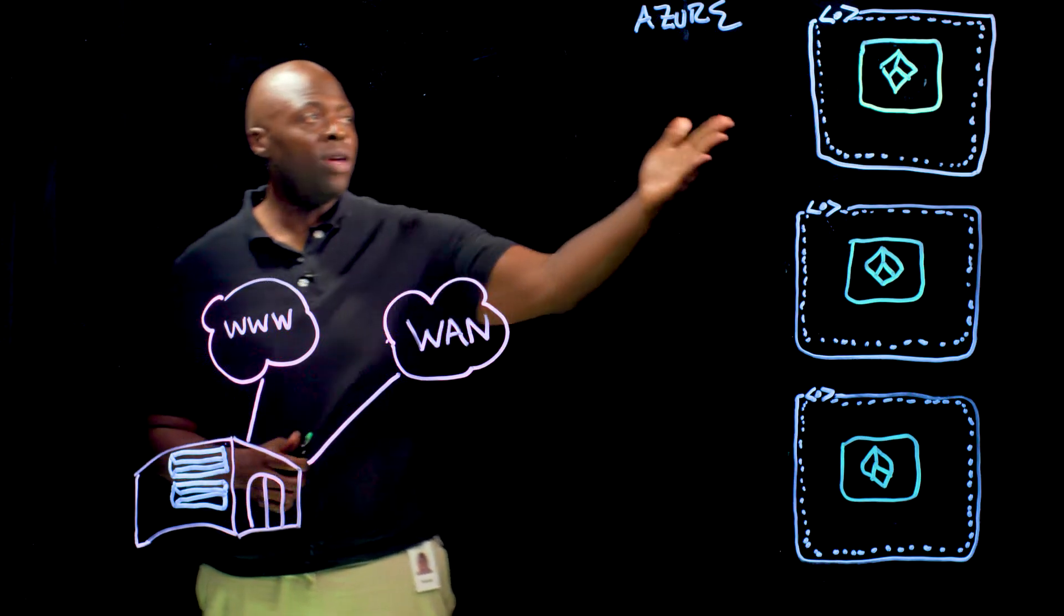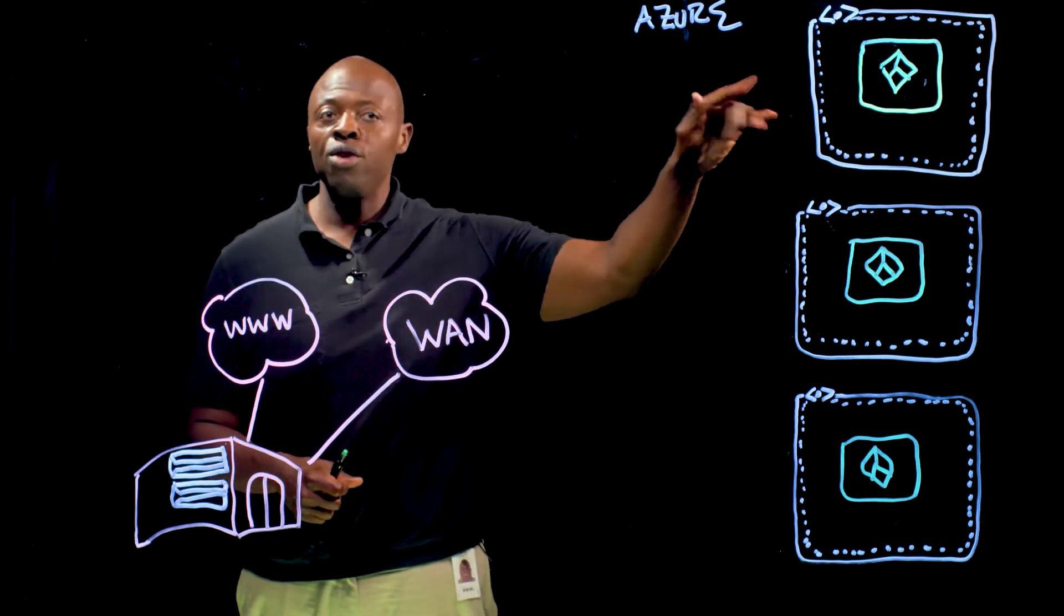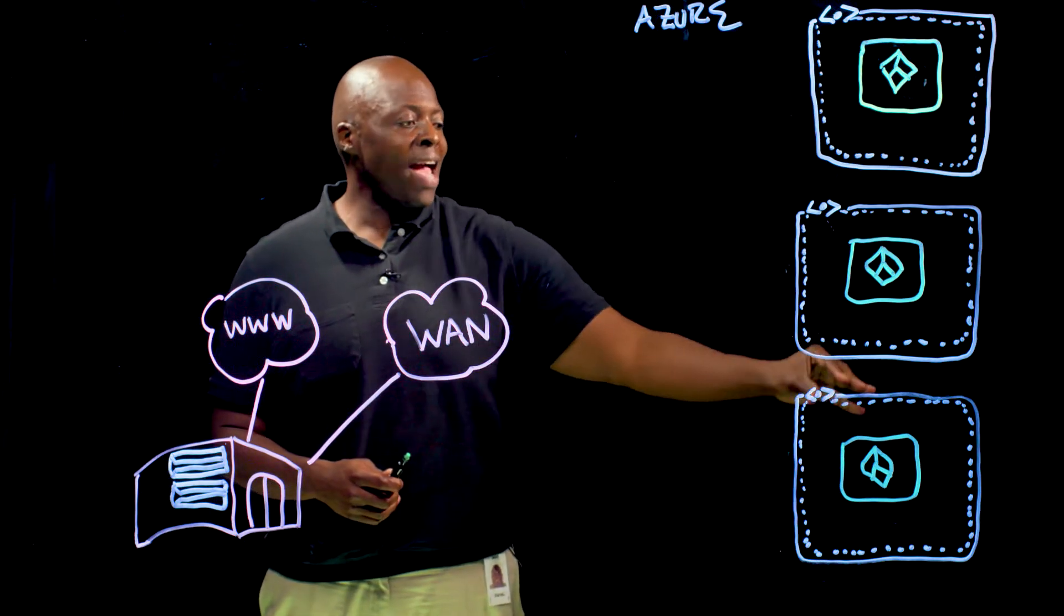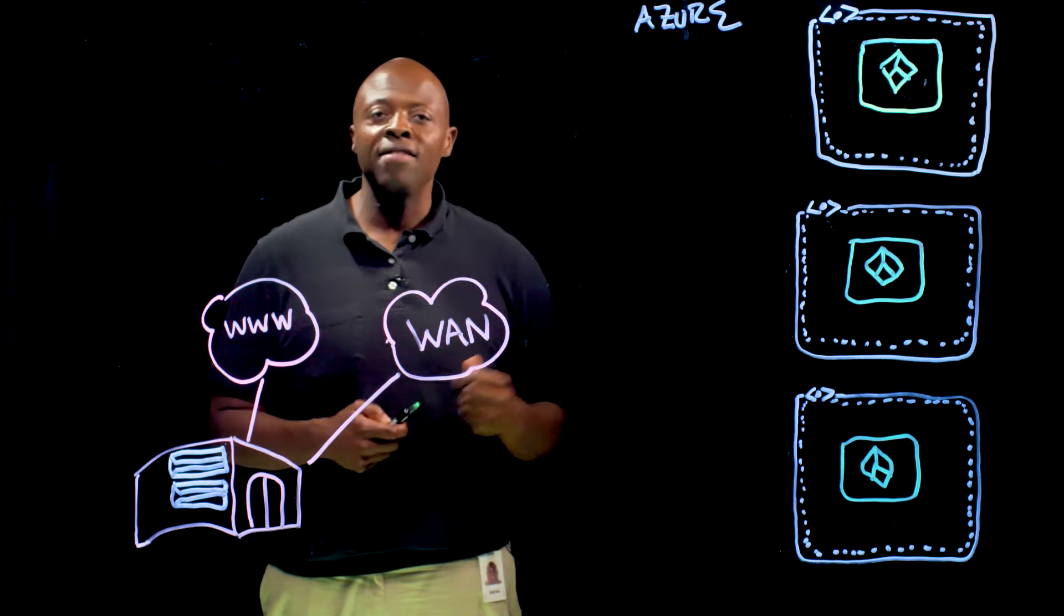In this scenario, we have three Azure Virtual Networks or VNets contained within an Azure region. We have workloads within each Azure Virtual Network to simulate traffic that will need outbound access.